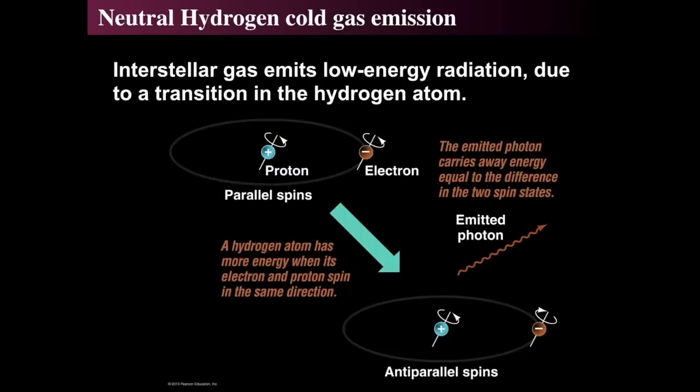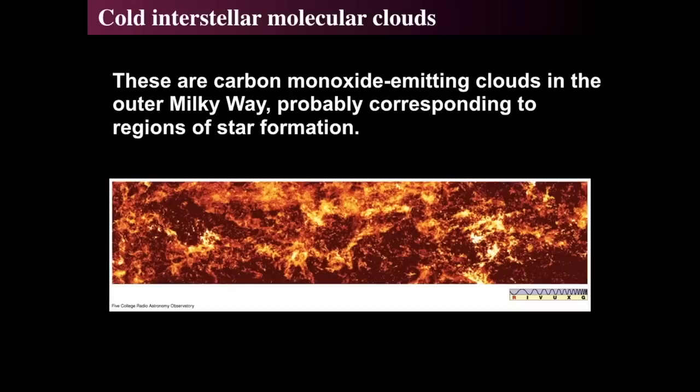Neutral hydrogen, H I regions, exhibit the spin-flip transition at 21 centimeters. The proton and electron can spin with the same orientation — parallel spins have a little more energy — and when the electron flips its spin to antiparallel, it emits a photon of radio light at 21 centimeters. We can make large maps of the Milky Way using this. A carbon monoxide map gives us a tighter view of the colder molecular gas.